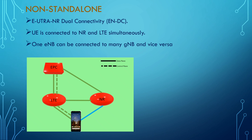One gNodeB can also be connected to many eNodeBs. In a simple diagram visualization, we can see LTE and NR both connected, and the data and control plane are visualized here. The control plane goes through LTE and the data plane goes through both.